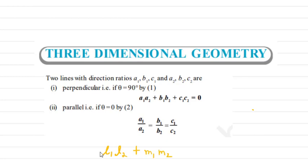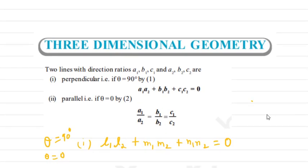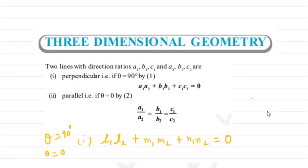That condition is for theta equals 90 degrees (perpendicular lines). When the lines are parallel, theta equals 0 degrees, and in that case a1/a2 = b1/b2 = c1/c2. If direction cosines are given, then l1/l2 = m1/m2 = n1/n2.